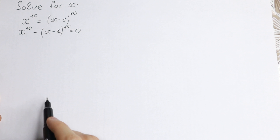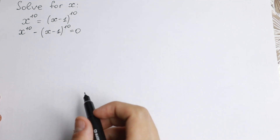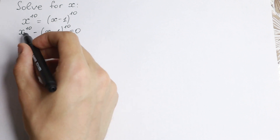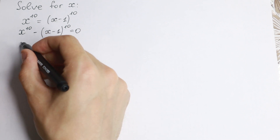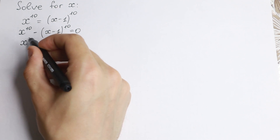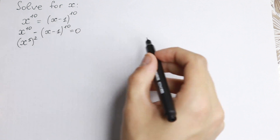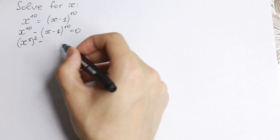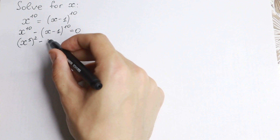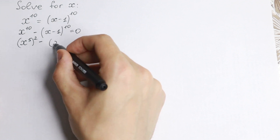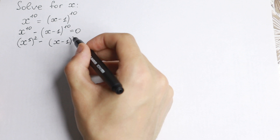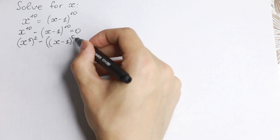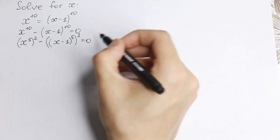We just bring this expression to the left hand side. Now, 10th power is a really good power because we can write this as x to the fifth power squared. And on the right hand side we can write it in the same way: x minus 1 to the fifth power, raised to the second power, equal to 0.